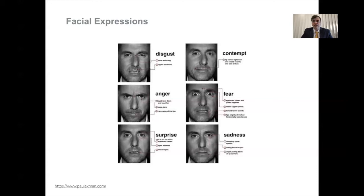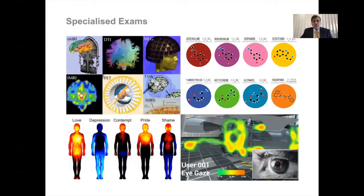The problem is that facial expressions can be forged. If we think about actors in cinema or theater, they use expression to convey their message without necessarily feeling the underlying emotion. People can mask their emotions externally using neutral or joyful facial expressions. There are also specialized exams that seek more intrinsic properties indicative of emotion, including medical imaging — fMRI, MEG, NIRS — different imaging approaches to discerning emotion with various degrees of success.